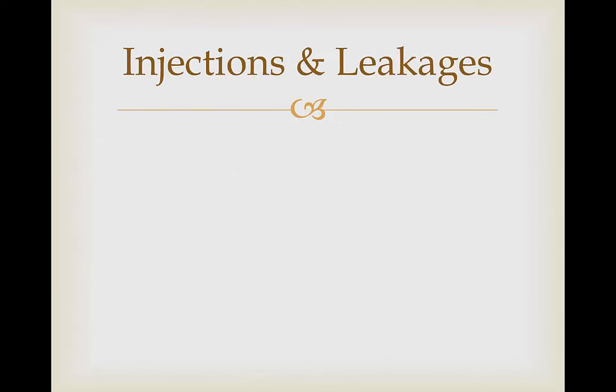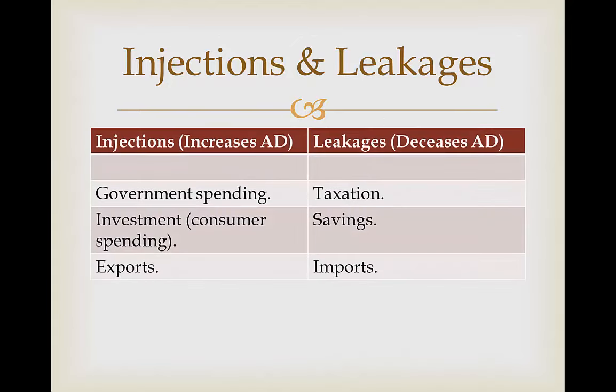So now we're going to have a look at examples of injections and leakages. Injections which increase AD are: government spending, investment or consumer spending, and exports. This is because we are actually spending more, which gives us more income in order to produce more goods and services that are ultimately going to be demanded. Taxation, saving, and imports are all leakages which are going to take away the amount of money we have available, and therefore decrease aggregate demand.